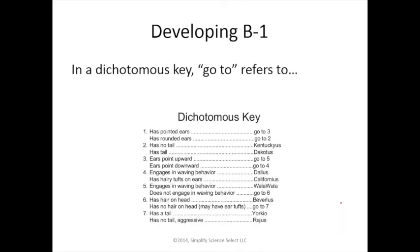Developing question: in a dichotomous key, 'go to' refers to what the next question you're going to ask is. Anytime you ask a question you have two options — for example, pointed ears tells us go to question three, rounded ears tells us go to question two. We follow the outline and keep going. If there are no more questions, instead of saying 'go to' it will tell us the name of the thing we're identifying.